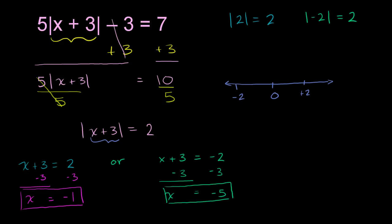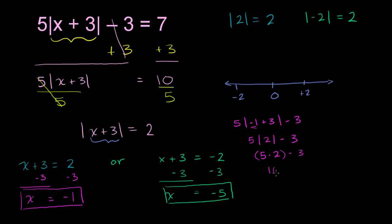Let's verify both solutions work. If x equals negative 1, we get 5 times the absolute value of negative 1 plus 3, minus 3. Negative 1 plus 3 is 2, so this is 5 times the absolute value of 2, minus 3. The absolute value of 2 is just 2, so we get 5 times 2 minus 3, which is 10 minus 3, which is indeed equal to 7. So x equals negative 1 is definitely a solution.